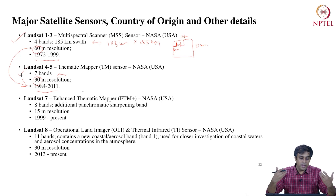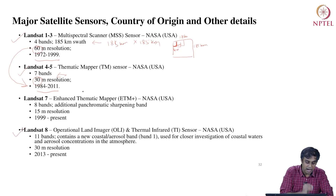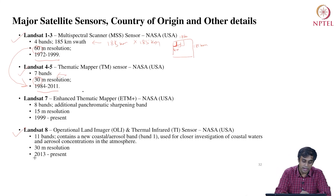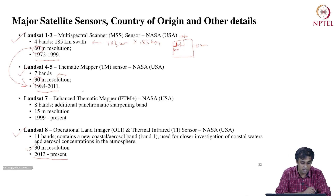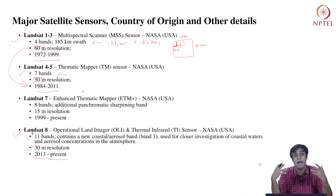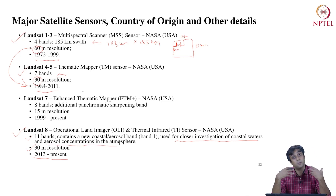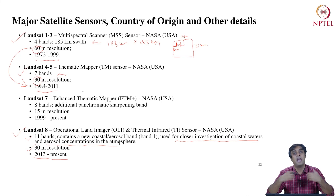Sensors kept evolving. We currently have Landsat 8, launched in 2013, which still has a 30-meter resolution but has 11 bands. These more sophisticated bands are used for closer investigation of coastal waters and aerosol concentrations — an indicator of air pollution. More sophisticated technology is incorporated as newer sensors are sent to space.